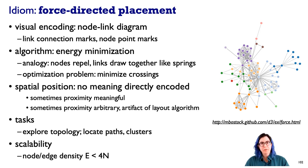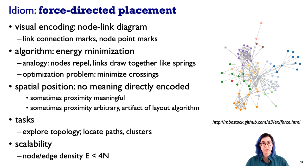Although spatial position carries meaning with tabular data, with force-directed placement no meaning is directly encoded in spatial position. Sometimes proximity means something — nodes may be tightly linked or form a cluster, as seen with the purple nodes in that diagram. However, sometimes proximity is arbitrary; a different layout with a different random seed could place things differently. Spatial position here serves readability goals rather than directly encoding information.